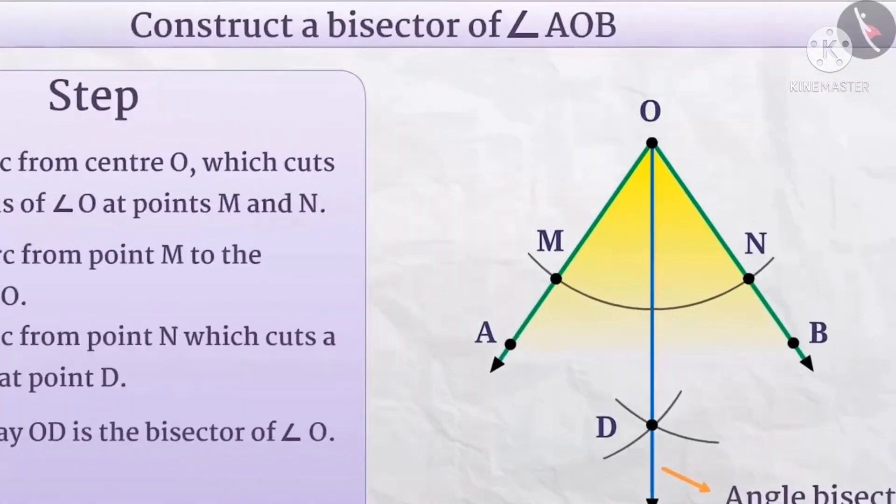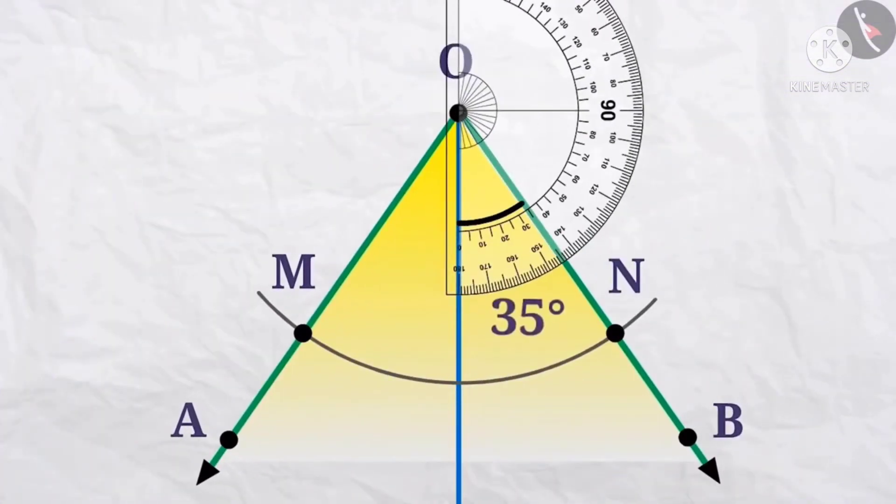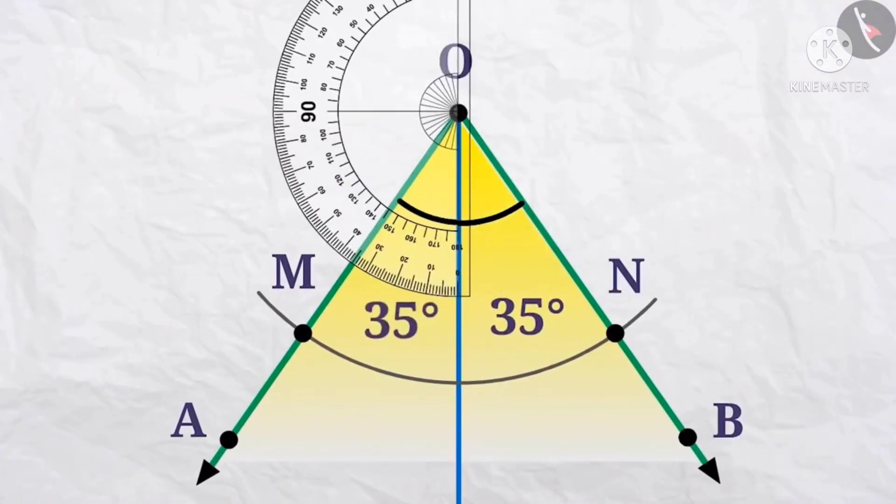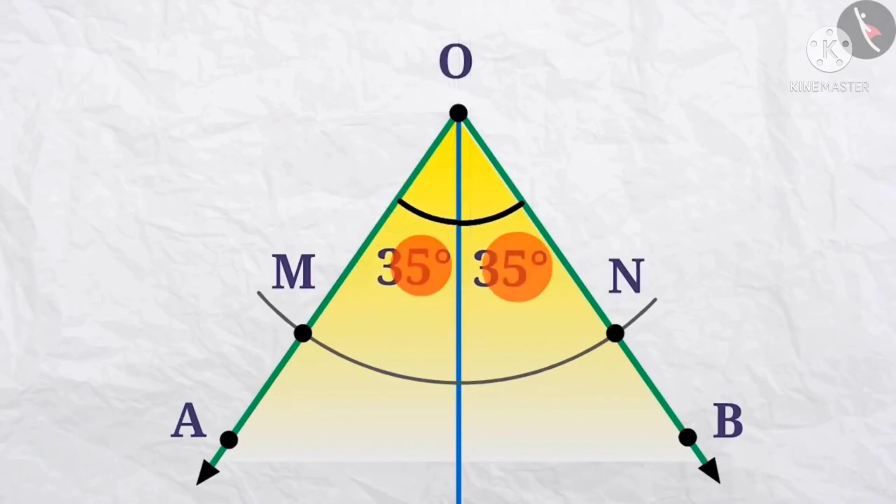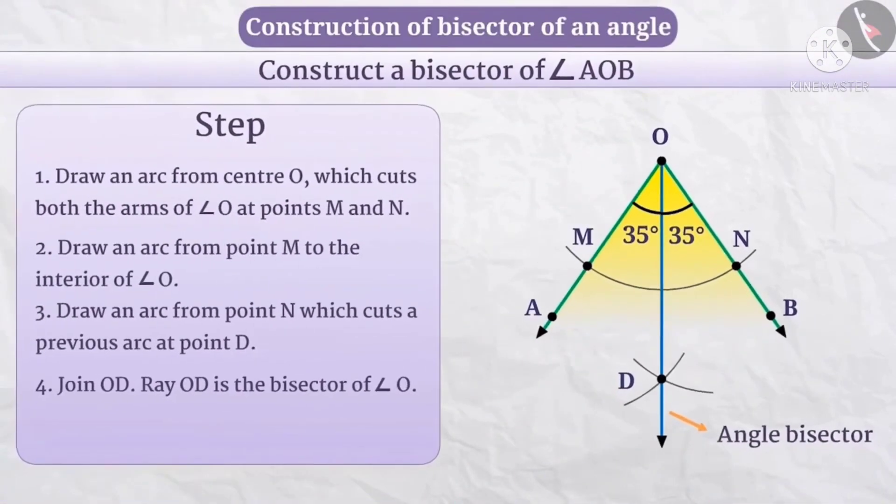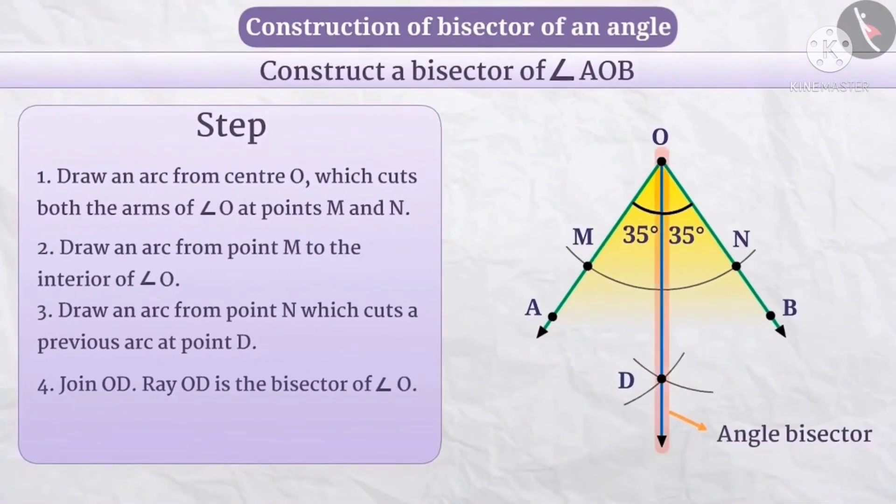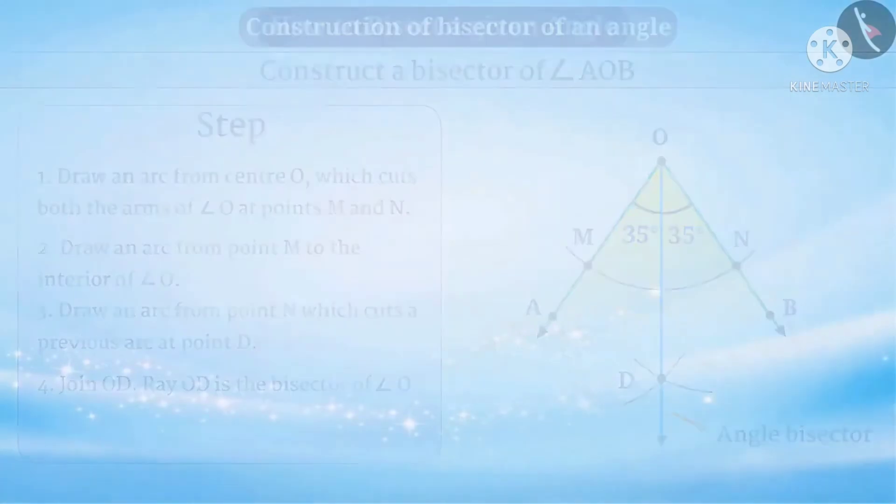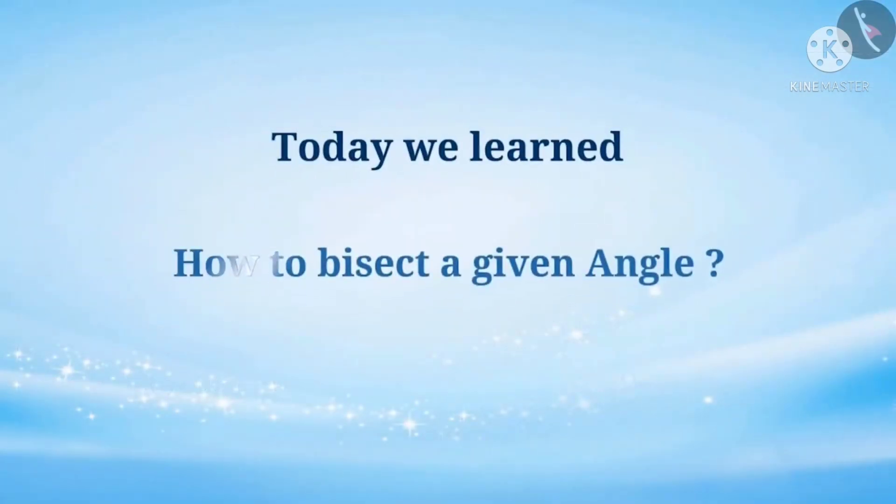We can verify using a protractor that these two angles have the same measurement. Therefore, ray OD is an angle bisector. Today we learned how to bisect a given angle.